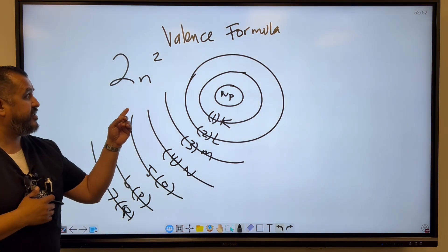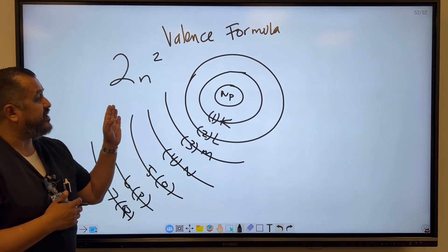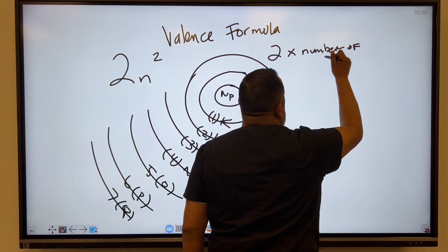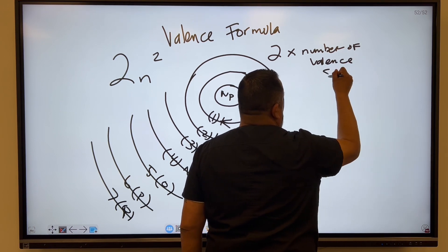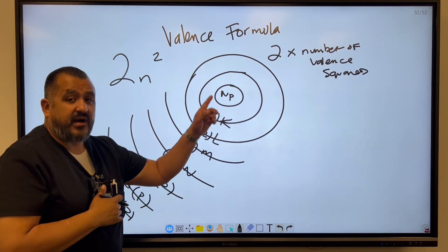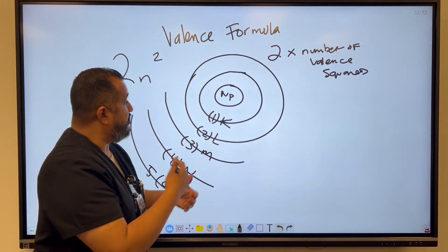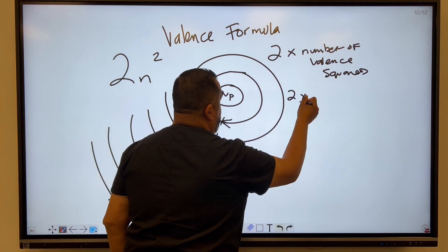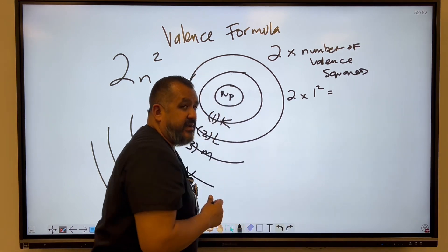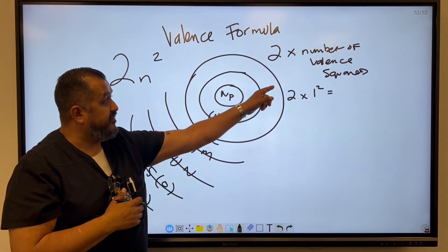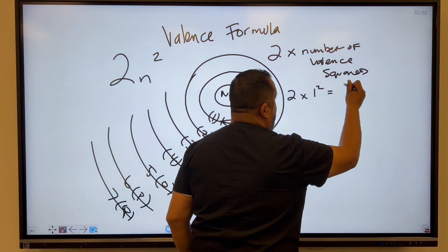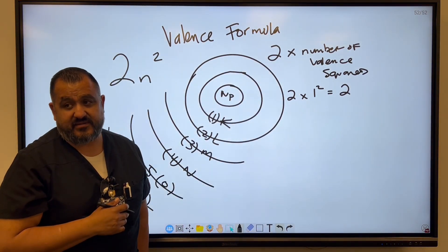So this formula is 2N². The way that you would write it out, it would be 2 as a constant number times the number of the valence squared. So 2 is a constant number, always going to be there as part of the formula. So 2 times the number squared. If K is number 1, it's going to be times 1 squared. So 2 times 1 squared. 1 times 1 is 1, times 2. The first energy level can hold up to 2 electrons.